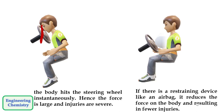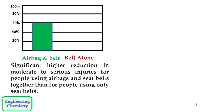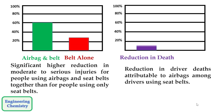If there is a restraining device like an airbag, it reduces the force on the body, resulting in fewer injuries. In the first case, force is distributed over a small area, whereas in the second case, force is distributed over a large area. Research has found a significantly higher reduction in moderate to serious injuries for people using airbags and seatbelts together than for people using only seatbelts. There is a 26% reduction in driver fatalities attributable to airbags among drivers using seatbelts.